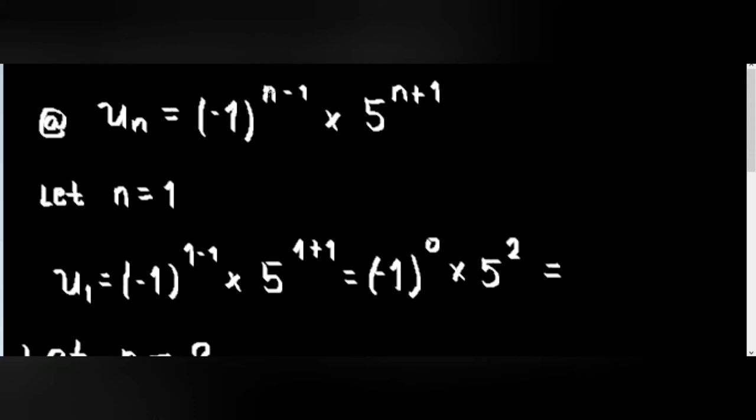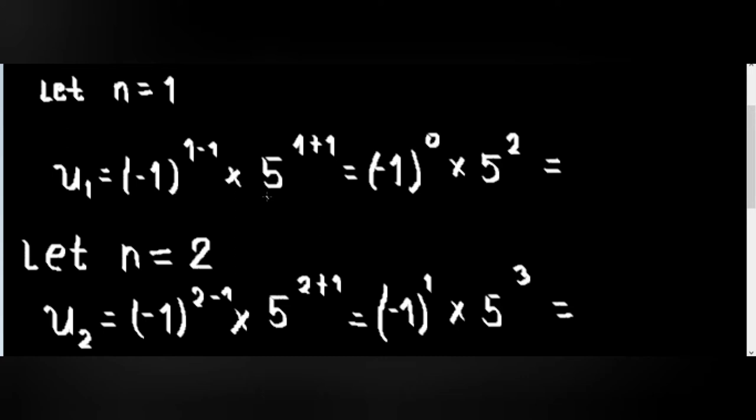Solving that example, given that u sub n is equal to negative 1 raised to n minus 1 times 5 raised to n plus 1, we are asked to look for the first five terms. So let n equal to 1: u sub 1 is equal to negative 1 raised to 1 minus 1 times 5 raised to 1 plus 1, which equals negative 1 raised to 0 is 1, times 5 squared is 25. Therefore, 1 times 25 is 25.